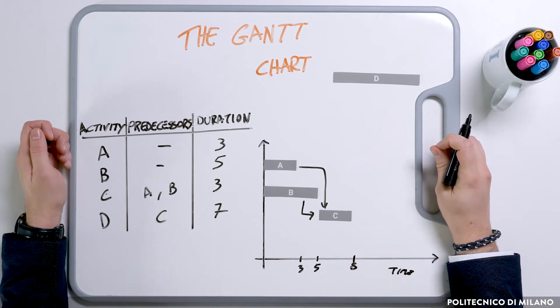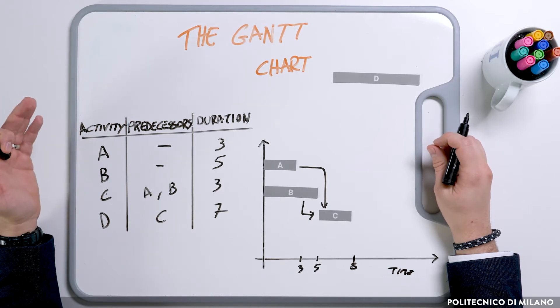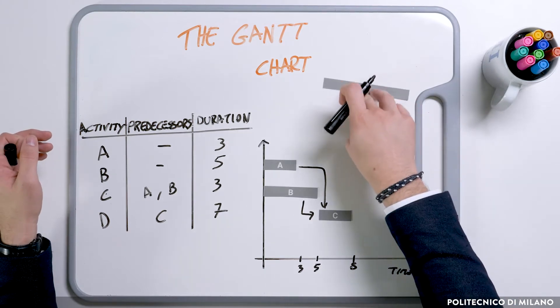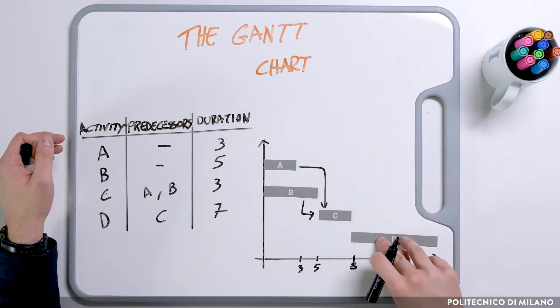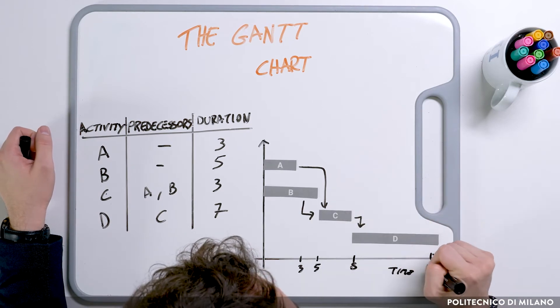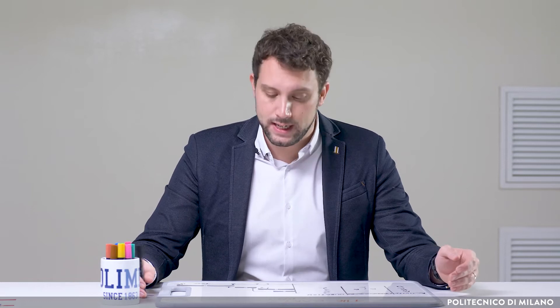Similarly, activity D cannot start before 8, since it needs C to be finished. Lasting 7, it will finish at 15. Even though the sum of the durations of all activities is 18, the project lasts 15, as you can see from the various activities overlapping on the Gantt chart.